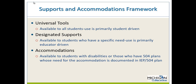This is our Supports and Accommodations framework — a three-tiered approach. The first tier is universal tools, a category available to all students where use is primarily student-driven. An example could be a highlighter. The second tier is designated supports — tools available to students who have a specific need, where use is primarily educator-driven, meaning an educator has decided the student needs this support and the student is already using it regularly in the classroom.